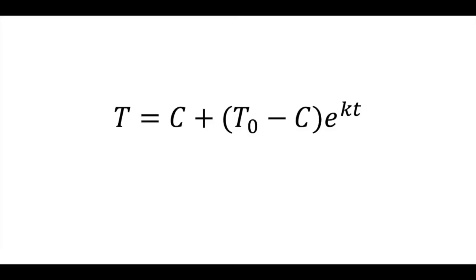Newton's law of cooling states that given an object's original temperature T sub null and an ambient temperature of C, the temperature T at a given time is C plus the product of the difference of T sub null and C, and E raised to the power K times T, where K is the constant of cooling and lowercase t is elapsed time.